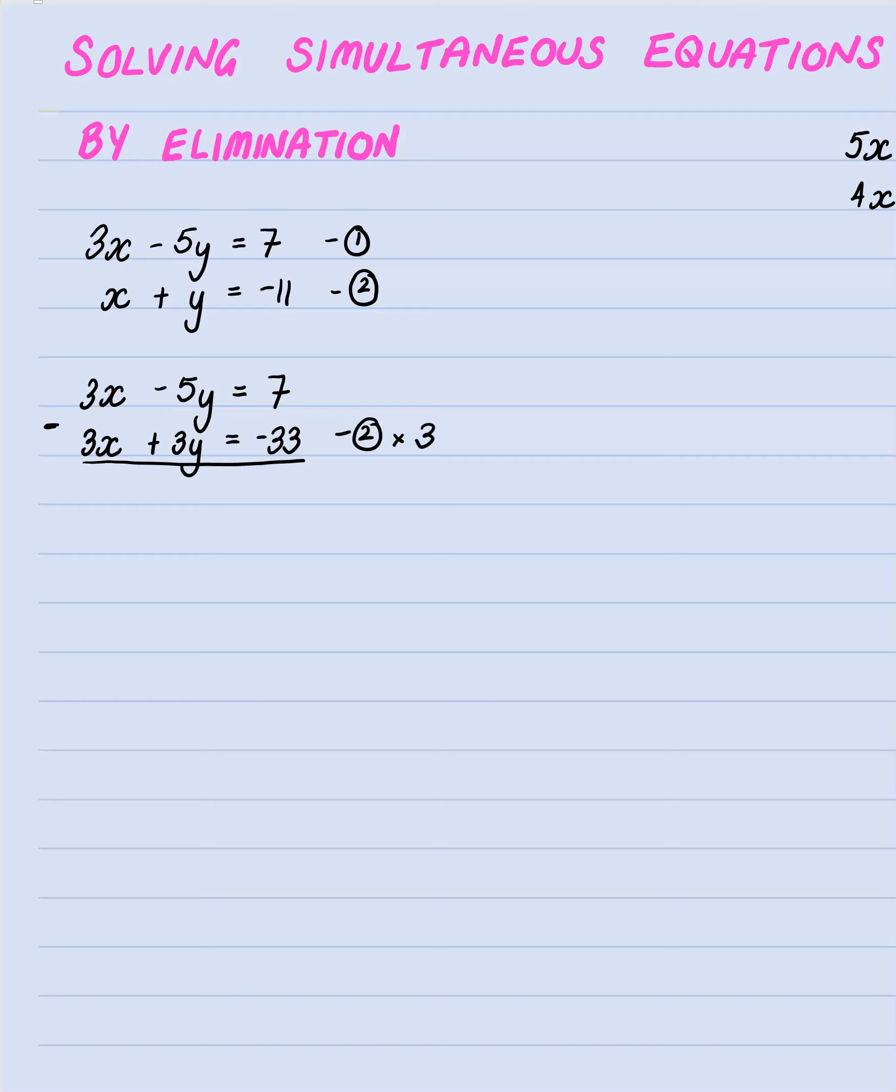Minus five take three is minus eight y and be careful here because seven minus minus 33 that becomes a positive 33 so we've got 40. And finishing off to get rid of the times negative eight we're going to divide by negative eight and I end up with y equals negative five.